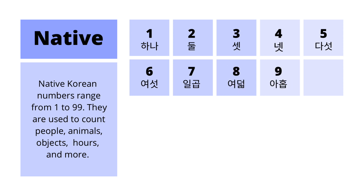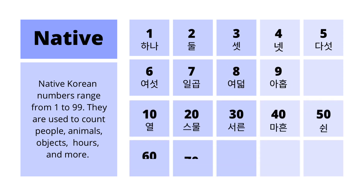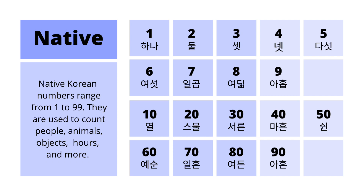Next, we'll count in groups of 10. We have 열, 스물, 서른, 마흔, 쉰, 예순, 일흔, 여든, and 아흔.